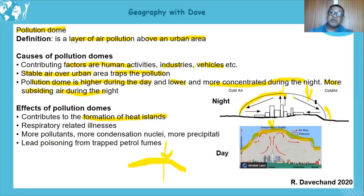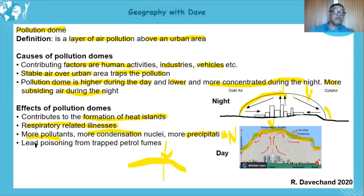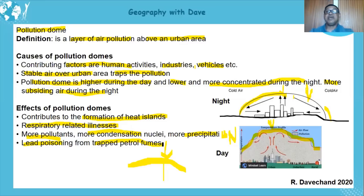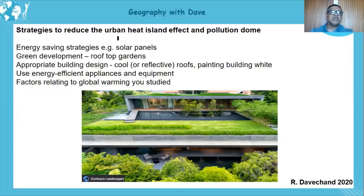Because the dome is closer at night it's more concentrated and traps heat more effectively. Other effects include respiratory illness from trapped pollutants, more condensation nuclei leading to more precipitation, and lead poisoning from trapped petrol fumes — though with the shift to unleaded fuel this is less relevant today, it can still apply in some contexts.